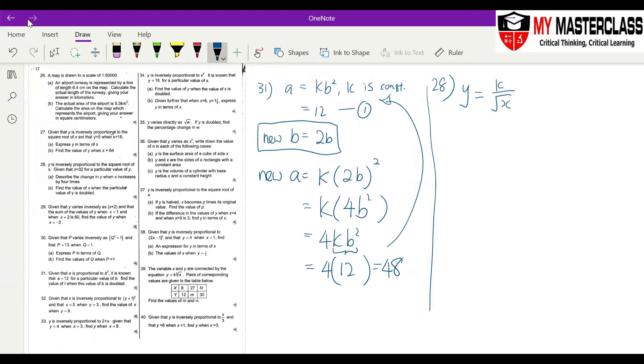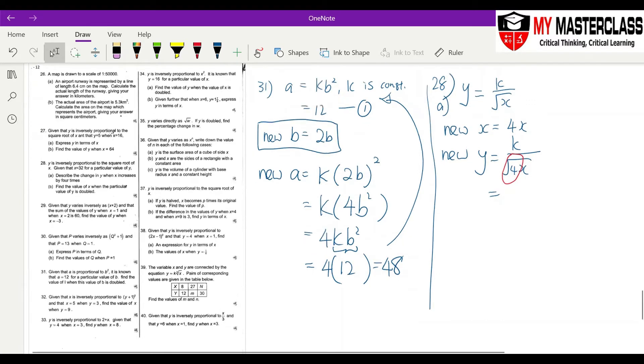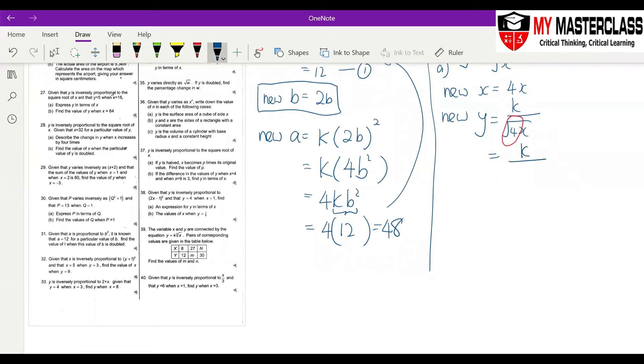Okay, so new x is equal to 4x. So this is for part A, I'm talking about A now. New y is equal to k over square root of 4x. What can you do to this square root 4? Square root 4 is equal to 2. So this will become k over 2 square root x.